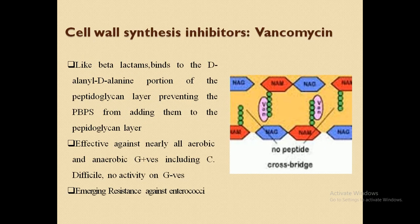Another group is glycopeptides — that is, vancomycin. Looking at its structure, it contains NAM and NAG (N-acetylmuramic acid and N-acetylglucosamine). Vancomycin is another drug distinct from beta-lactam antibiotics. It binds to the D-Ala-D-Ala portion of the peptidoglycan precursor and prevents penicillin-binding proteins from adding subunits to the peptidoglycan layer. Vancomycin is effective against nearly all gram-positive aerobes and anaerobes, including Clostridium difficile, but has no activity against gram-negative organisms. Emerging resistance has been observed.